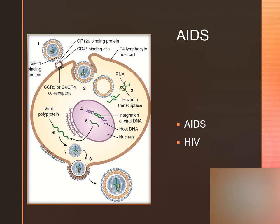There are also some replication enzymes with HIV. We have reverse transcriptase, which copies the viral RNA to the DNA of the virus. Then integrase will incorporate that viral DNA into the host cell DNA, allowing the cell to begin to replicate. And then protease, which frees the replicated viral particles into the cytoplasm of the cell.